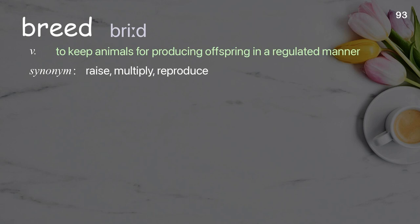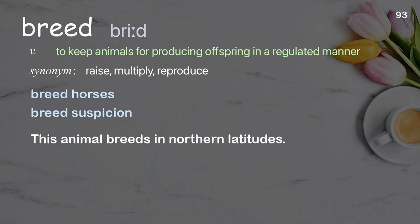Breed. To keep animals for producing offspring in a regulated manner. Examples: breed horses, breed suspicion. Sentence: This animal breeds in northern latitudes.